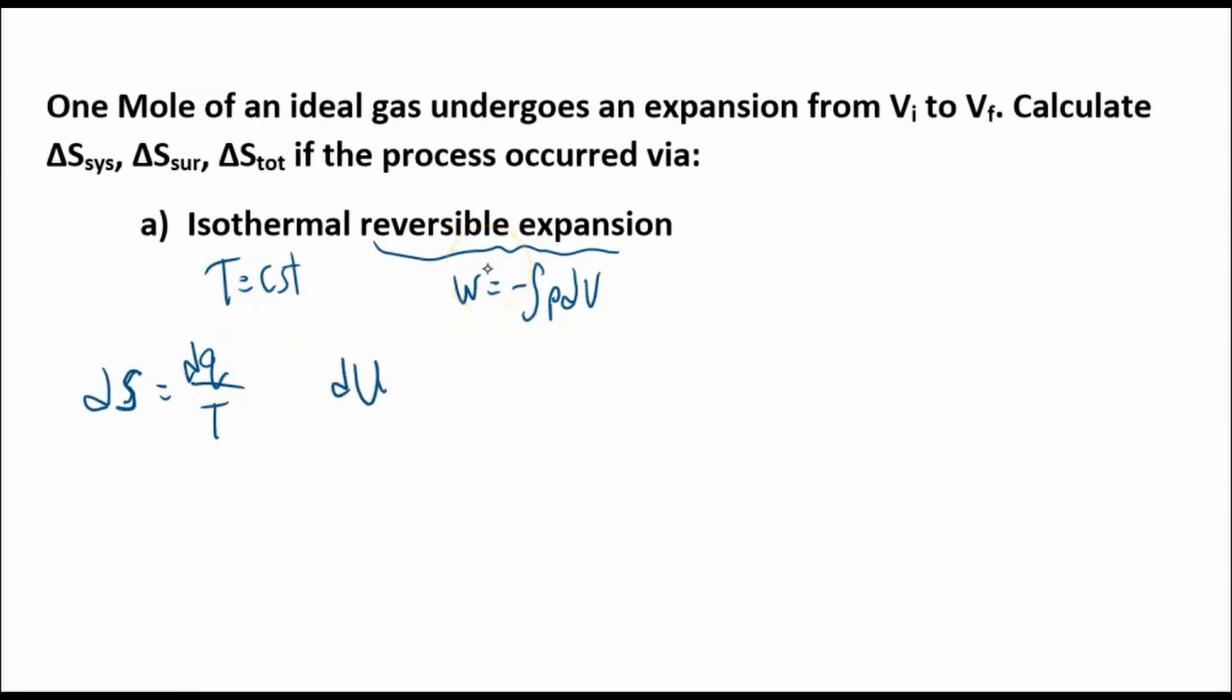Here's the first law. dU equals dq plus dw. This is the first law, and if it's an isothermal expansion of an ideal gas, the change in internal energy is zero because the average kinetic energy is the same for an ideal gas. Temperature is constant. dU is zero.